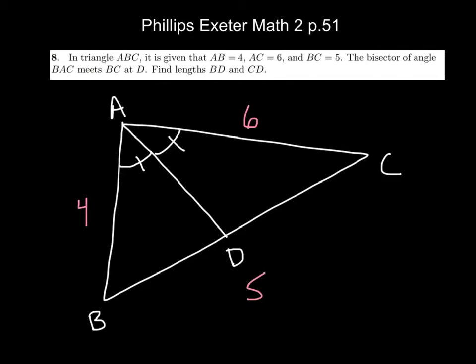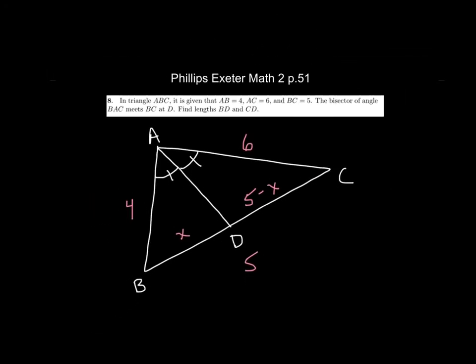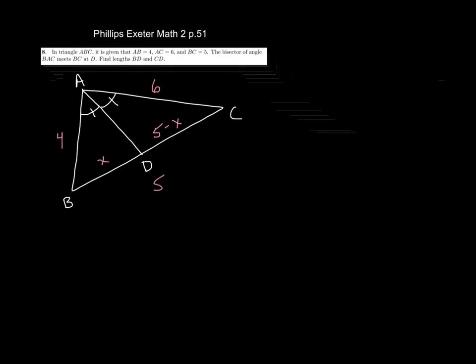So, like usual, if we want to find a part, we want to find BD. Let's just call that x. If we call that x, what can we call CD? 5 minus x. Now I have that. So, let's make a proportion here. We can go 4 over x equals what? 6 over 5 minus x.